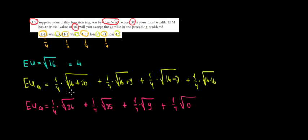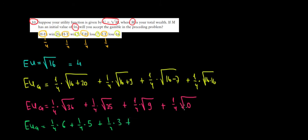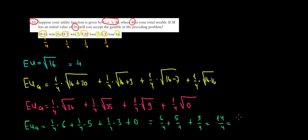So the expected utility of this gamble equals 1/4 × 6, plus 1/4 × 5, plus 1/4 × 3, plus 1/4 × 0. That gives us 6/4 + 5/4 + 3/4, which is 14/4, or 7/2, equal to 3.5.